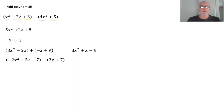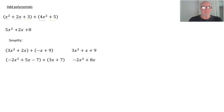Try this one: (−2x² + 5x − 7) + (3x + 7). Pause, simplify that, and then resume. If you did this correctly, you'd get −2x² + 8x.